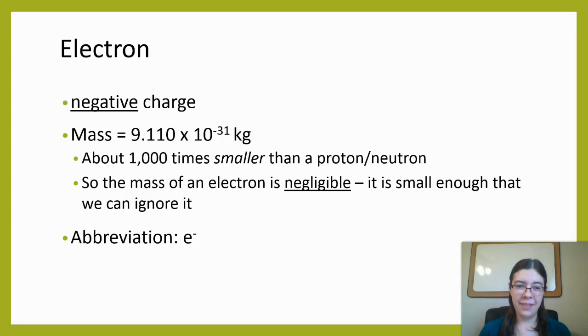Electrons are negatively charged, and there's no fun memory trick here. You just kind of have to memorize it: electrons are negative. Now the mass of an electron is even smaller than that of a proton and a neutron. It's 9.1 times 10 to the negative 31st kilograms. So this means about a thousand times smaller than the mass of a proton and a neutron. So in the grand scheme of things, this mass really doesn't make a difference in the whole atom's mass.